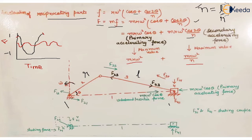The maximum value of the secondary accelerating force is 1/n times that of the primary accelerating force. In most systems, n is much larger than 1, so this value tends to be much smaller in comparison to the primary accelerating force. Therefore, for further analysis we do not take the secondary accelerating force into account and proceed with only the primary accelerating force.